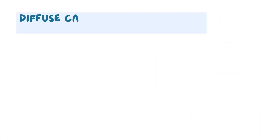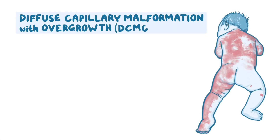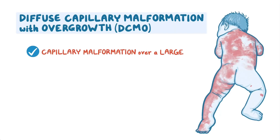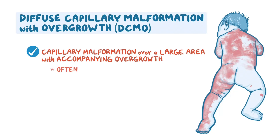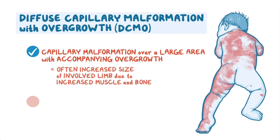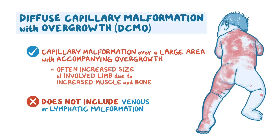Diffuse capillary malformation with overgrowth, or DCMO, involves capillary malformation over a large area of the body with accompanying overgrowth. Often increased size of an involved limb due to increased muscle and bone, but does not include venous or lymphatic malformation.